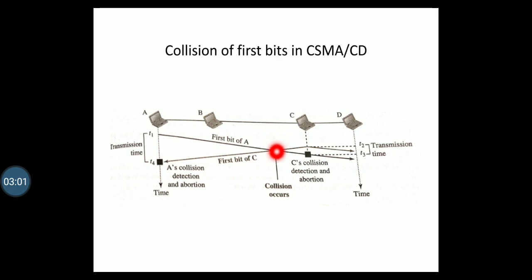The collision occurs somewhere after time T2, because bits are propagating in both directions. At time T3, station C detects the collision when it receives the first bit of A's frame. Station C immediately aborts transmission and stops sending.